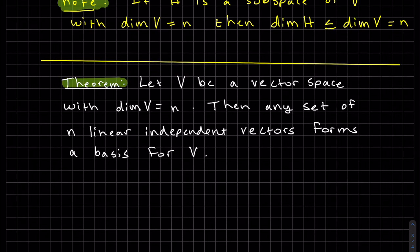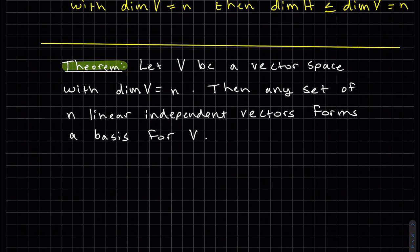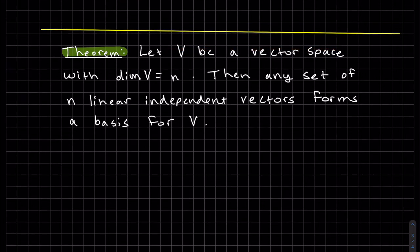If v is a vector space, and the dimension of v is n, then any set of n linear independent vectors forms a basis for v. This is kind of a spin-off if you have n elements in our basis for rn, and they're linearly independent, then they form a basis. But now it doesn't have to be rn. It can be any vector space. That's the difference. So here's our proof.